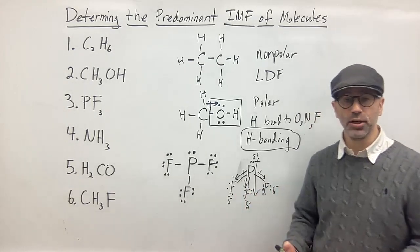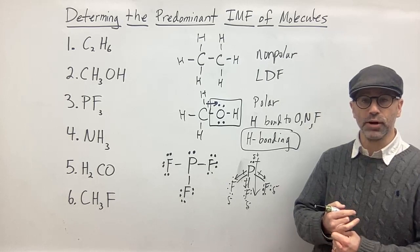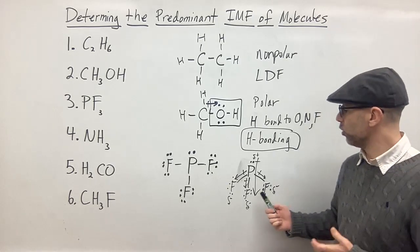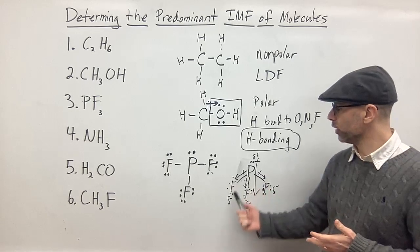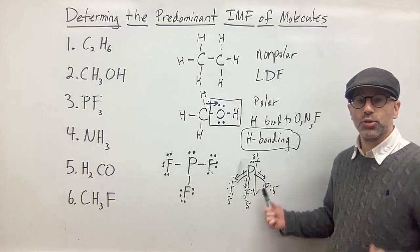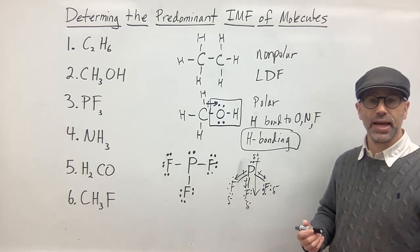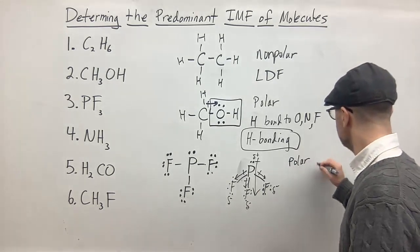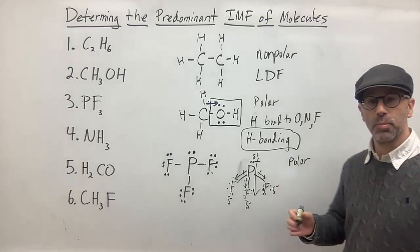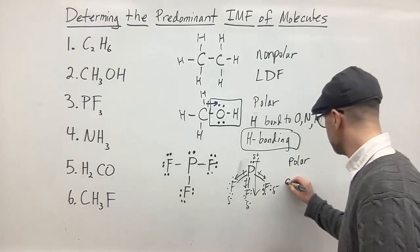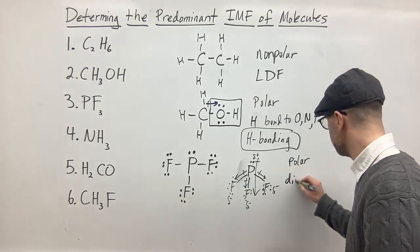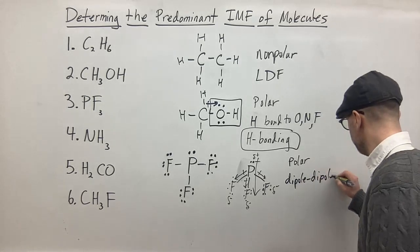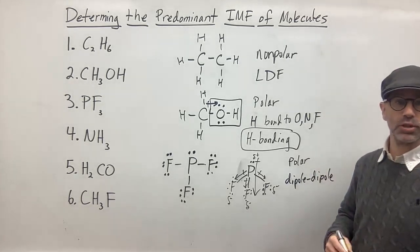Because you have a polar molecule, you have dipole-dipole interactions as an intermolecular force. However, notice we don't have hydrogen bonded to fluorine, so there is no hydrogen bonding. This is a polar molecule but with no hydrogen bonding, so the predominant intermolecular force is dipole-dipole.